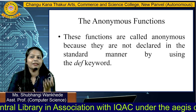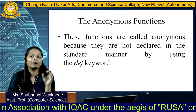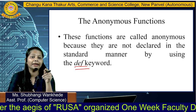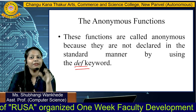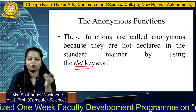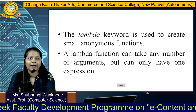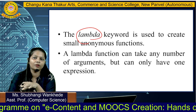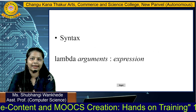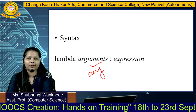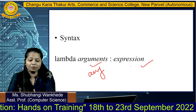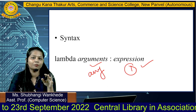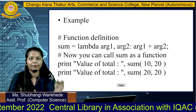Next is anonymous functions. Anonymous means something which does not have a name. These functions are called anonymous because they are not declared with the def keyword. As we have seen in Python, we write the def keyword to define a function. When we are not writing def, such functions are called anonymous functions. Here, the lambda keyword is used instead of def. Lambda can take any number of arguments, but only one expression.